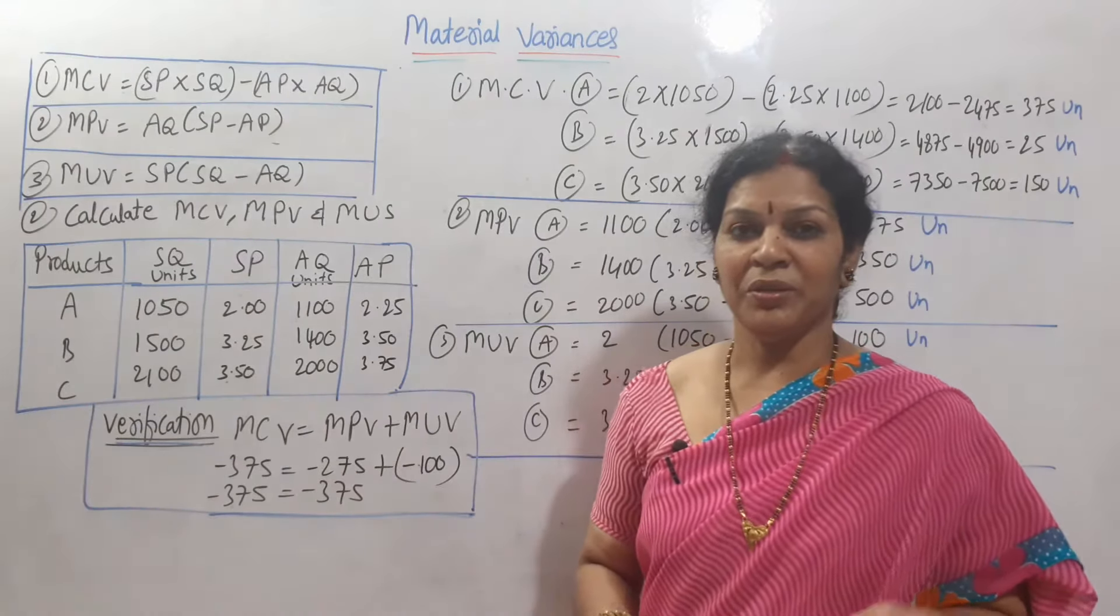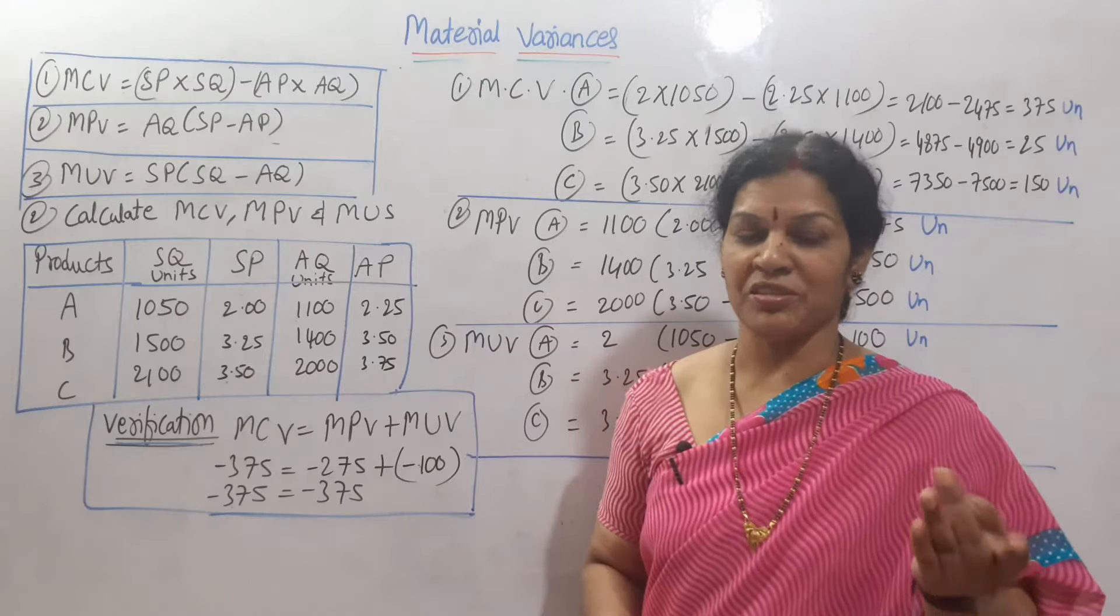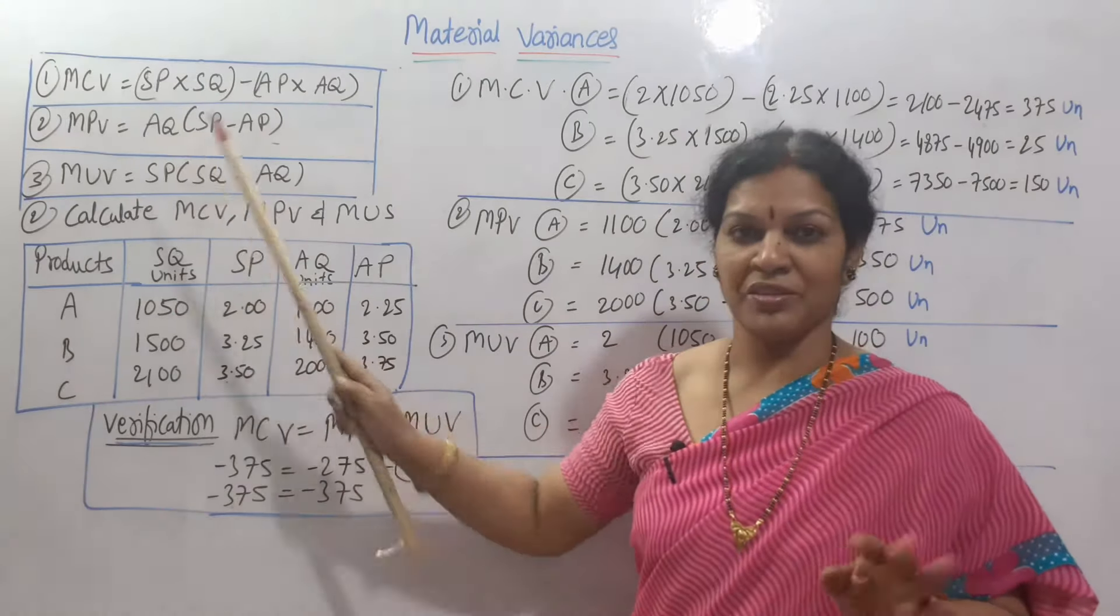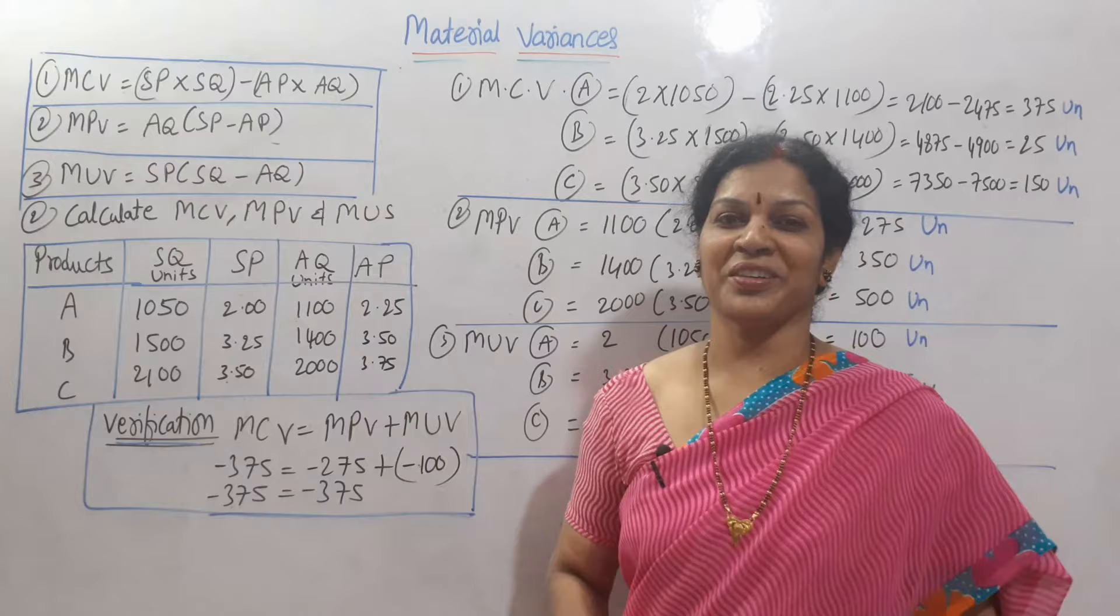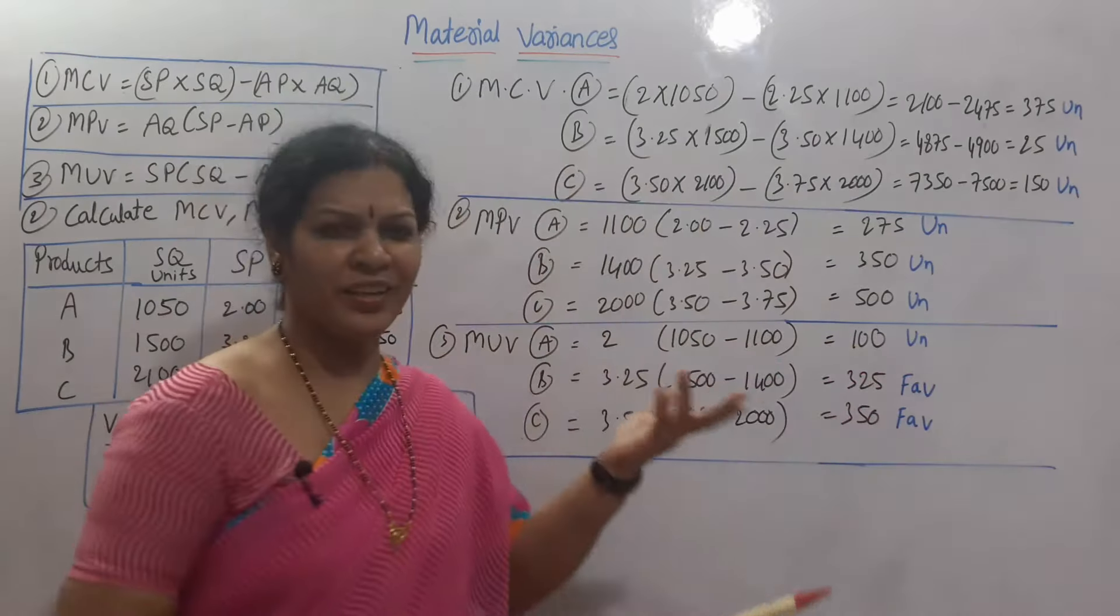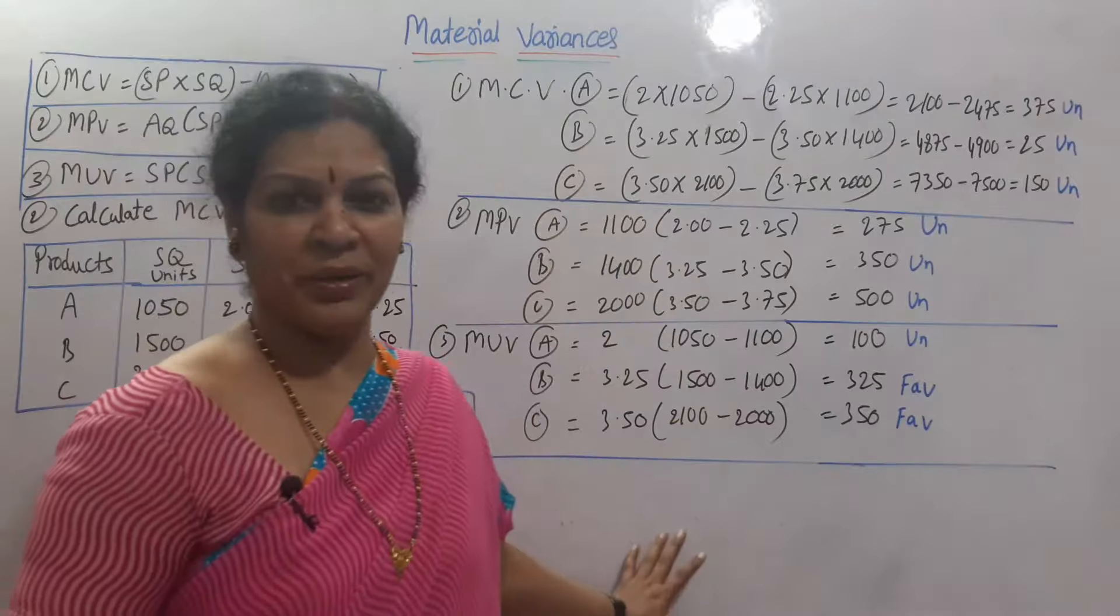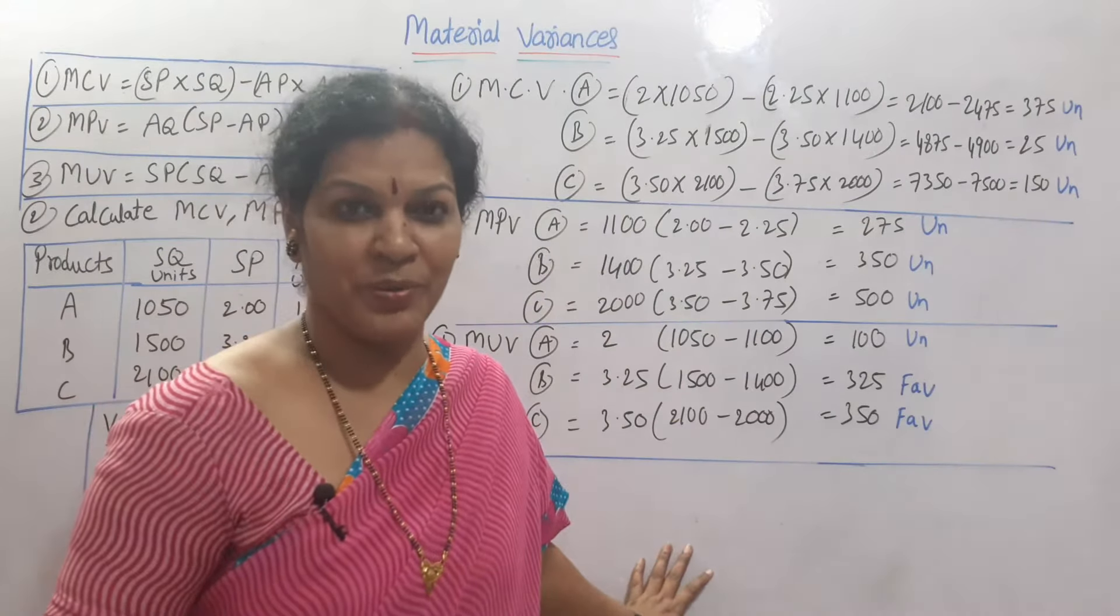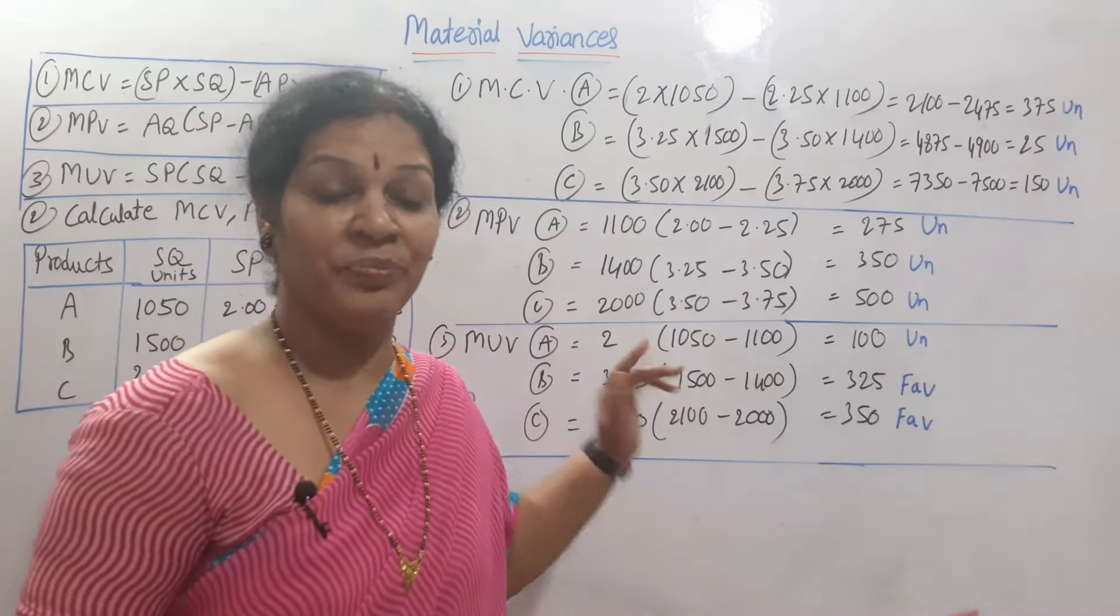What we have to find out? Material cost variance, material price variance, material usage variance. These three. Form last you know it. Pause the video, start working out. Now check your answers. Calculations only. That is why I have already prepared it, easy to explain you without wasting your time.